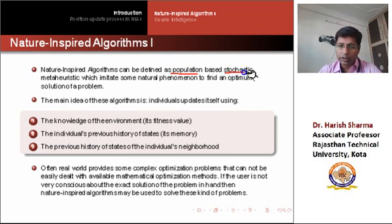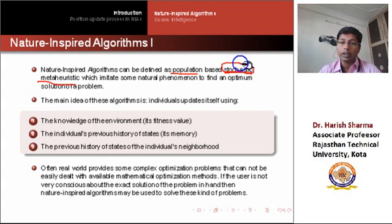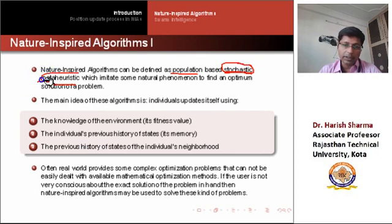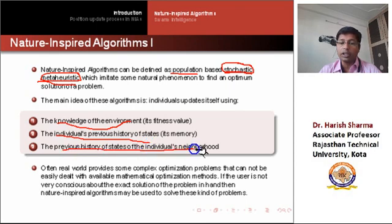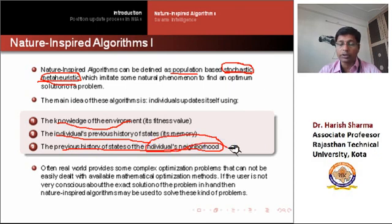These algorithms are considered stochastic metaheuristics. Stochastic means these algorithms use previous intelligence plus a random component, and these are generalized algorithms. The next step of an individual is decided by the environment knowledge, by the individual's previous history of states, and the previous history of states of the individual's neighborhood — meaning they learn from the society.